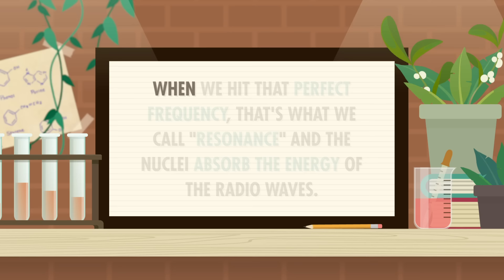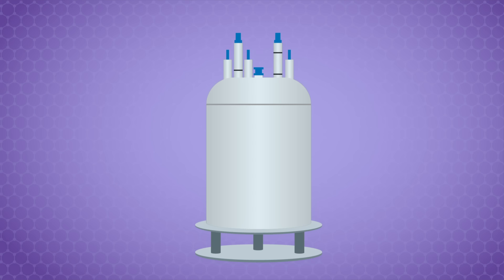Now we've got the nuclear and magnetic parts of NMR covered. But what about the resonance? It turns out that particular frequencies of radio waves will cause the nuclei to flip from one spin state to the other. When we hit that perfect frequency, that's what we call resonance, and the nuclei absorb the energy of the radio waves. This is where a detector measures the frequency and intensity of the radio wave that got absorbed, and plots it on a spectrum.